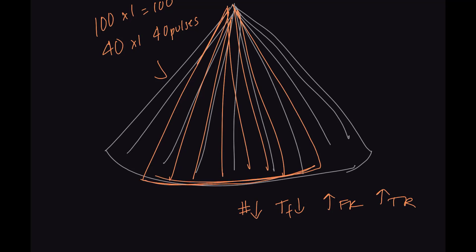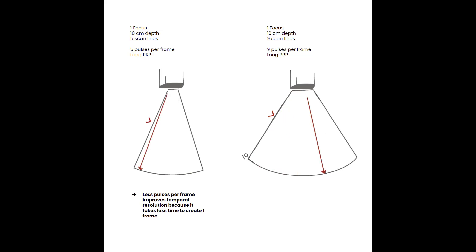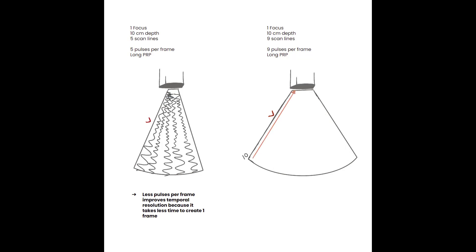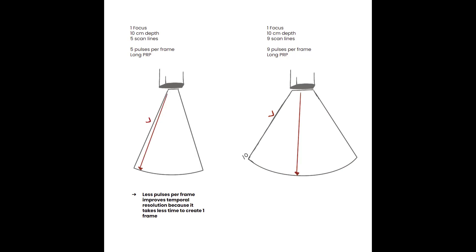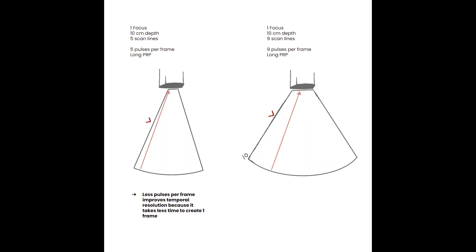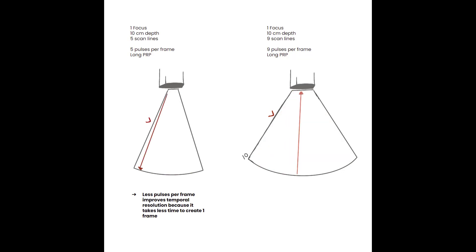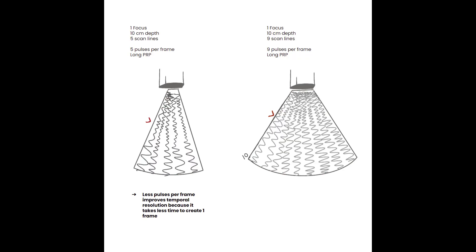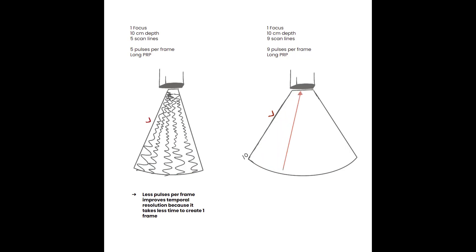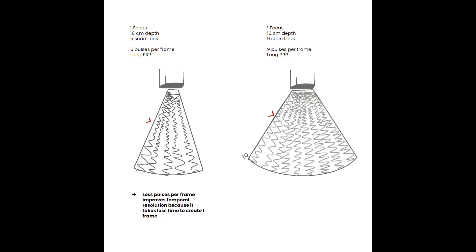Whenever possible, use a narrow field of view when trying to capture the true motion of a structure. Side-by-side comparison: the left image has one focus, 10 cm depth, but a narrow sector using only five scanlines. The right image uses a wide sector with nine scanlines. The narrow sector produces frames at almost double the rate of the wider sector — we can see about four frames for every two frames produced by the nine-scanline setup. Reduce your sector to reduce pulses per frame and improve temporal resolution.